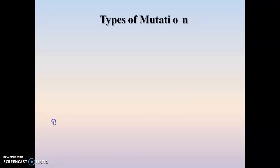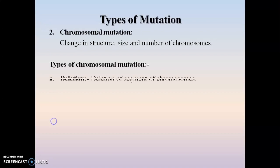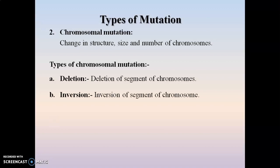The second major type of mutation is chromosomal mutation, where changes occur in the structure, size, and number of chromosomes. Chromosomal mutation is of four types. The first is deletion, where a particular segment of a chromosome gets deleted, causing a decrease in the size of the chromosome. The second type is inversion, where a particular segment of a chromosome gets reversed or inverted, and that is called inversion of a chromosome.